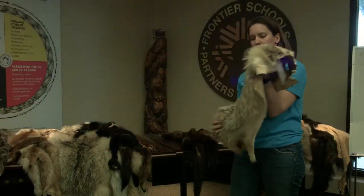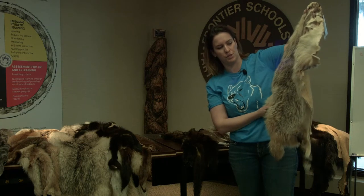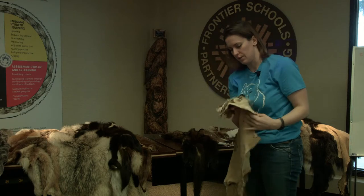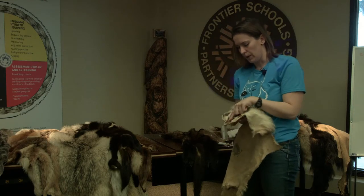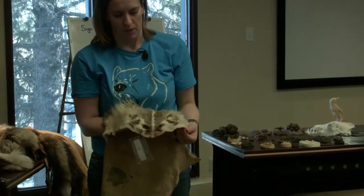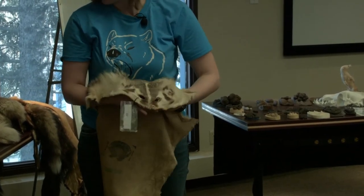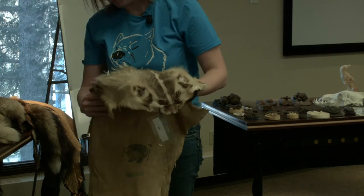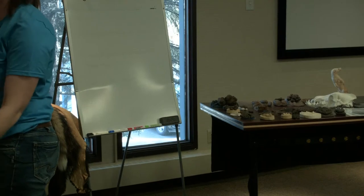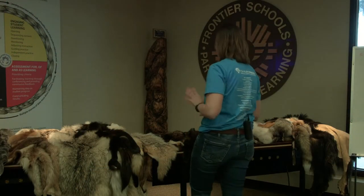Our badger is easily identified by its face marking — white stripe down the forehead followed by two darker stripes. Pretty easy to identify based on that unique striping. Badgers can vary in size and can be darker or lighter in color, so there's a little bit of a range there.